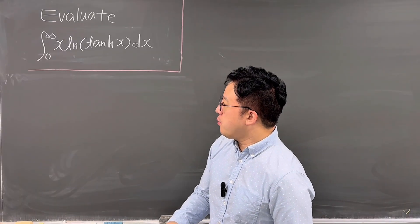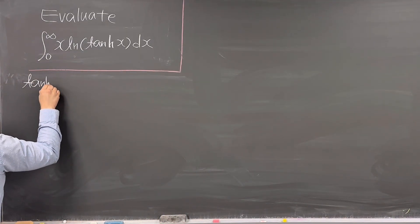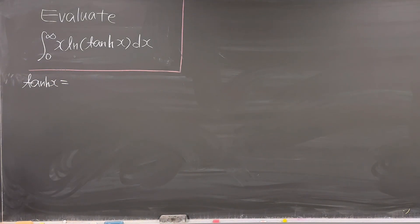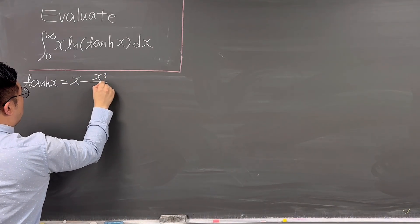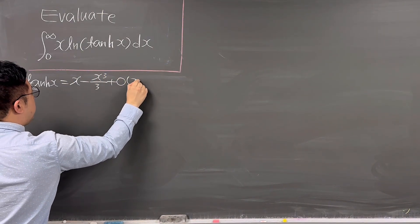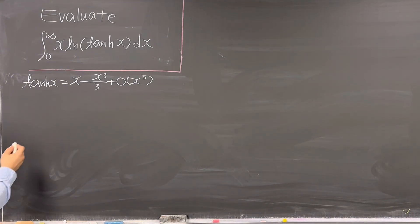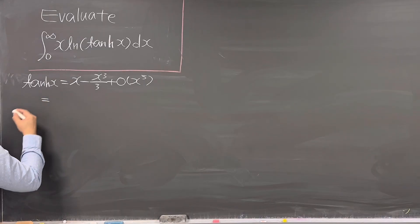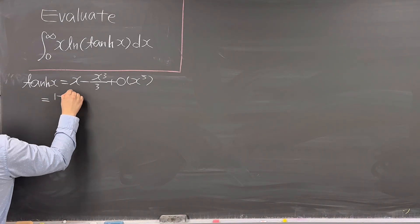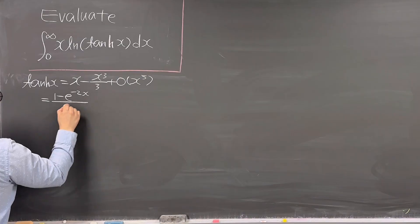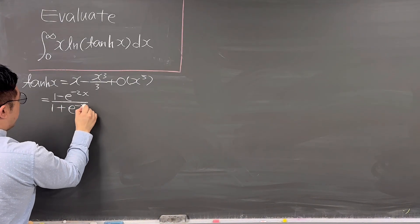First of all, we already know tanh x. We can represent this as x minus x cubed over 3 plus big O of x to the power of 5. At the same time, tanh x is also represented as 1 minus e to the power of negative 2x, over 1 plus e to the power of negative 2x.